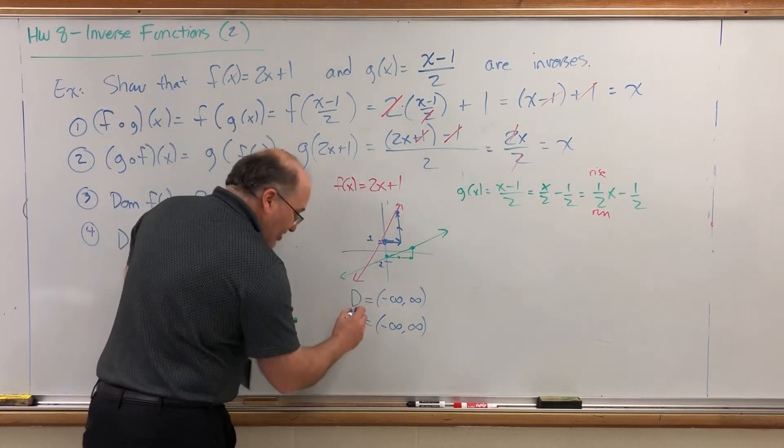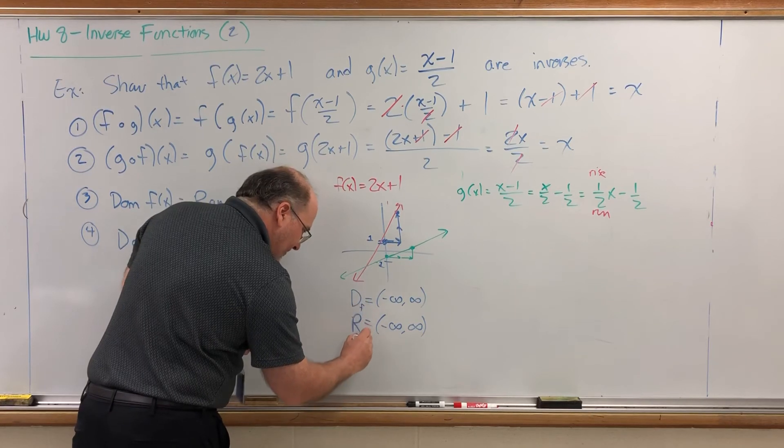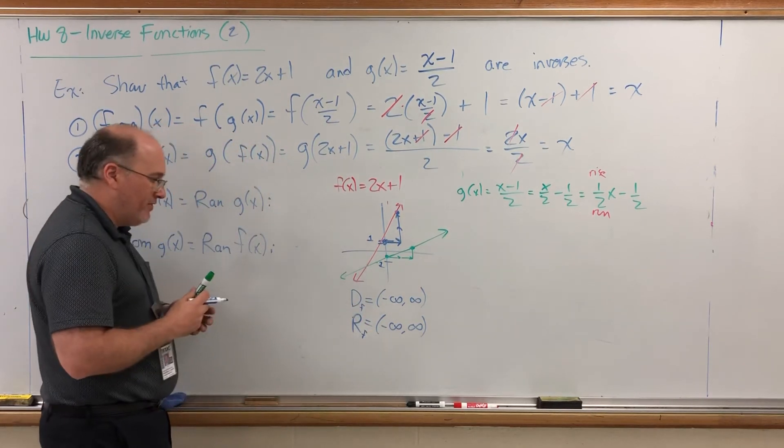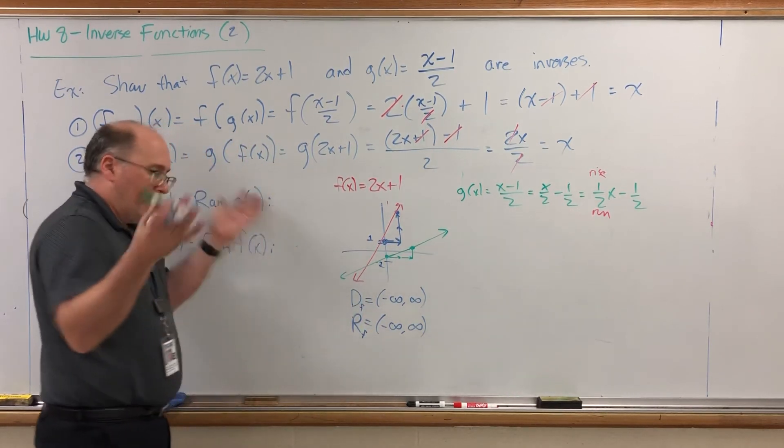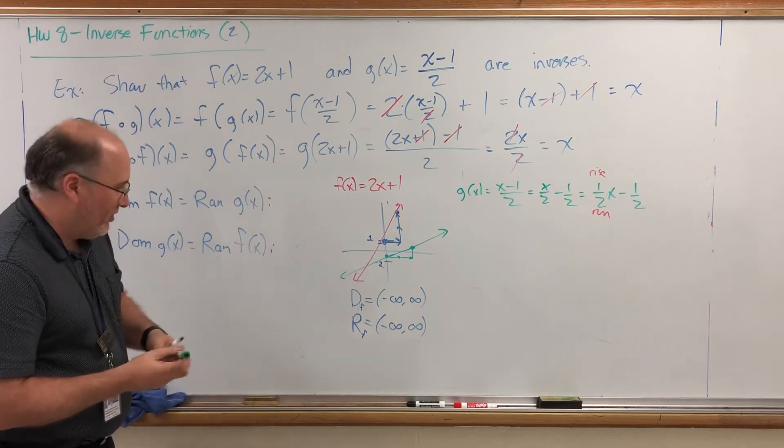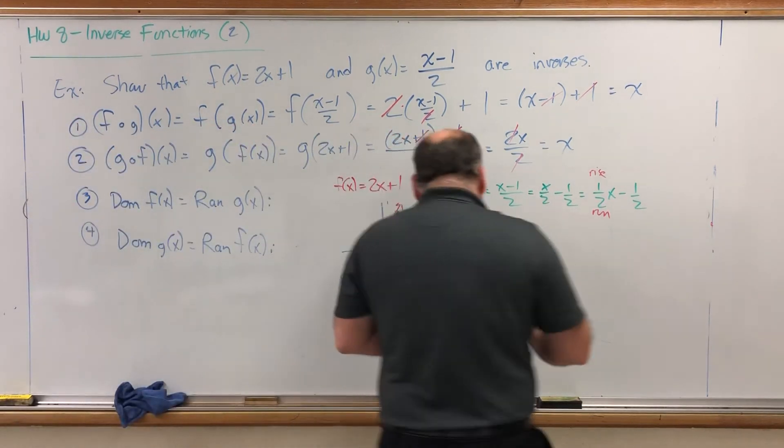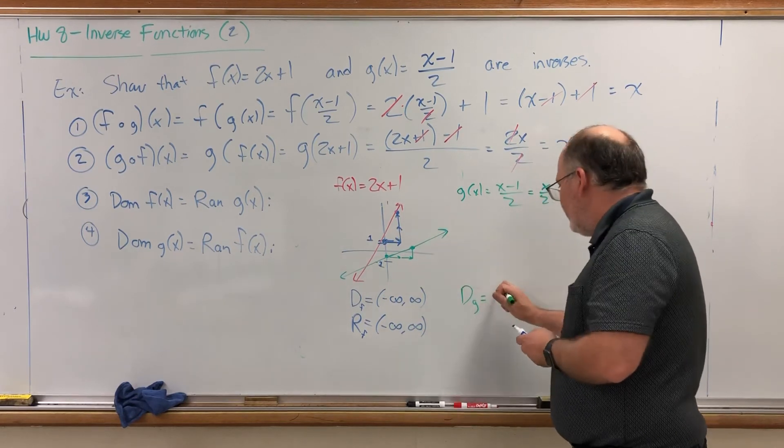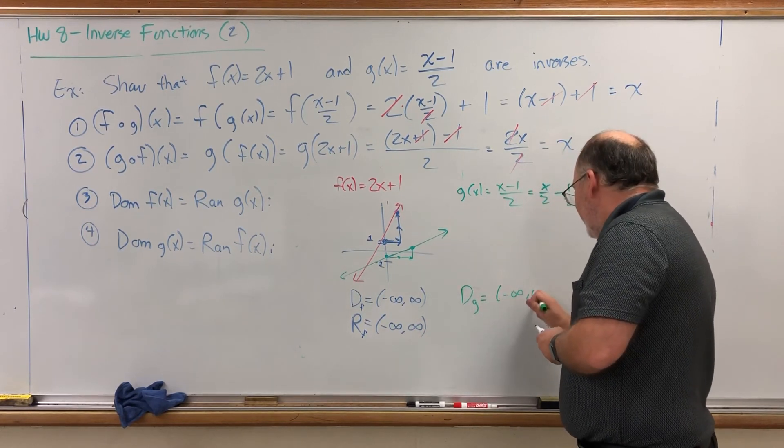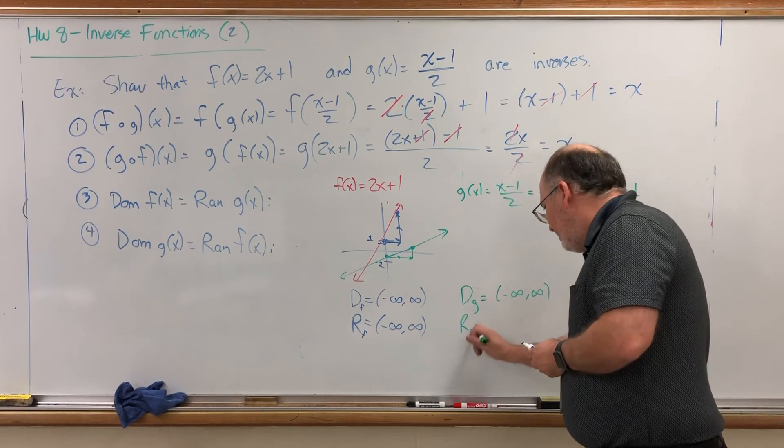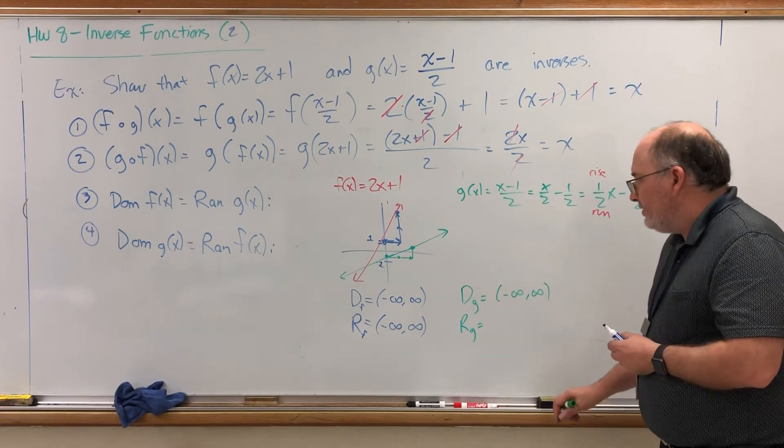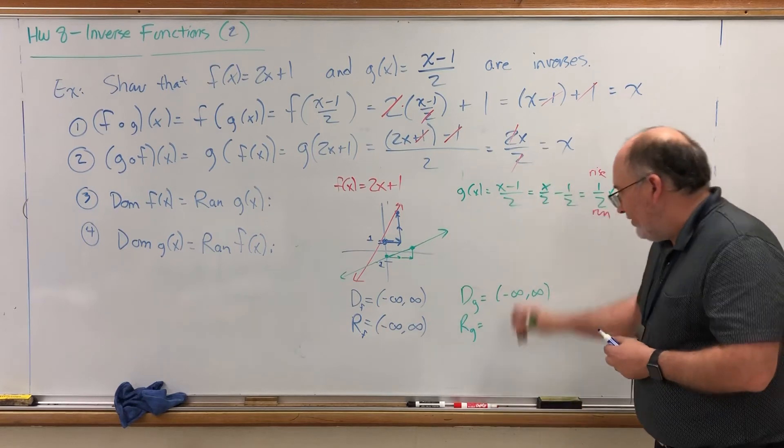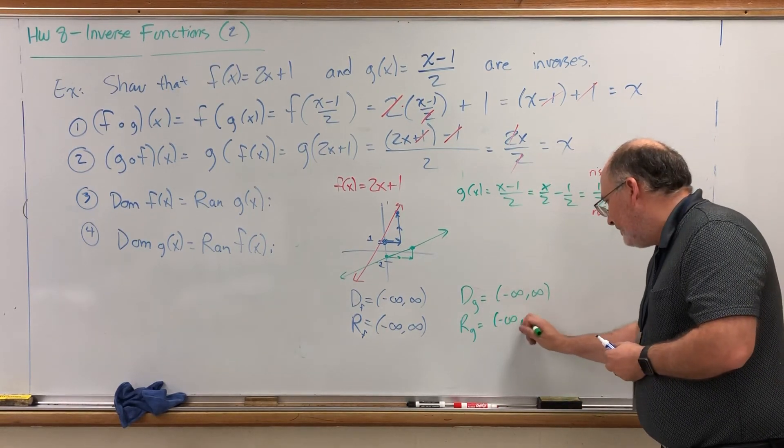For this domain and range here, I'm just going to subscript them with an f to indicate that that was the domain of f and the range of f. I know I'm all over the place with the notation. I'll blame it on the lack of lunch. For the domain of g, well, this green line goes forever left and right, so negative infinity to infinity. And for the range of g, which I'll call rg, goes forever bottom, forever top, so negative infinity to infinity.